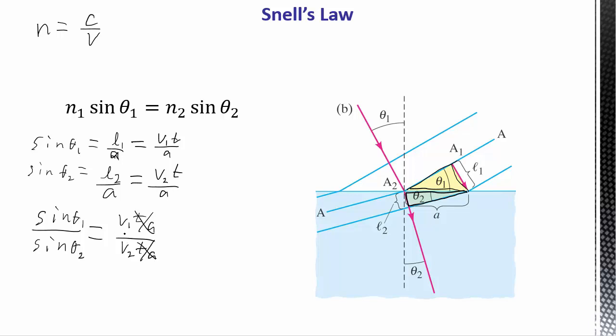So we can multiply these Vs over. So I'm going to get V2 sine theta one equals V1 sine theta two. And then if I substitute in here, if I rearrange this, so I get V equals C over N, then I'm going to have, let's see, C over N2 sine theta one equals C over N1 sine theta two.